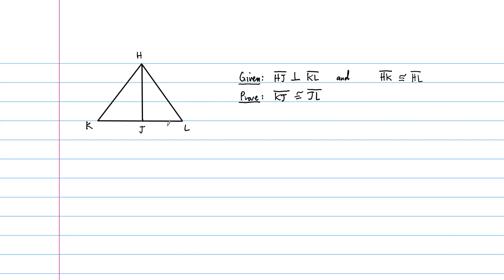We're going to write this proof in what we call the formal table format. But first we should plan out how we're going to prove this. In a proof, you have to state everything along with reasons for why you're stating it. Some of the stuff we'll state was given to us, and from there we can use definitions, properties, and all kinds of other tools.